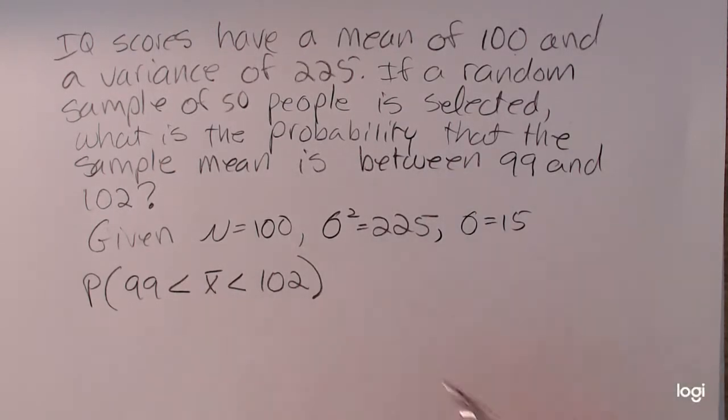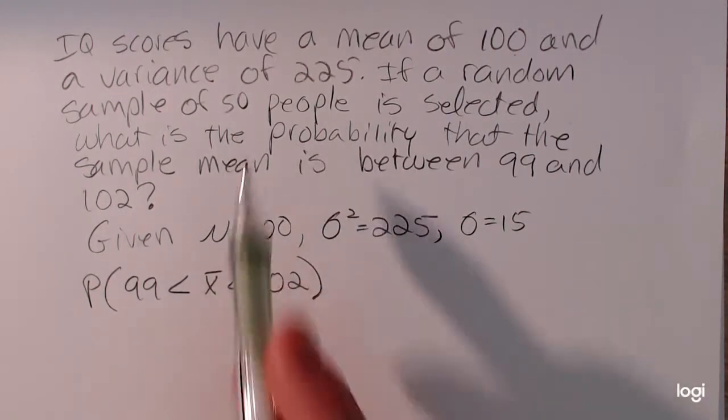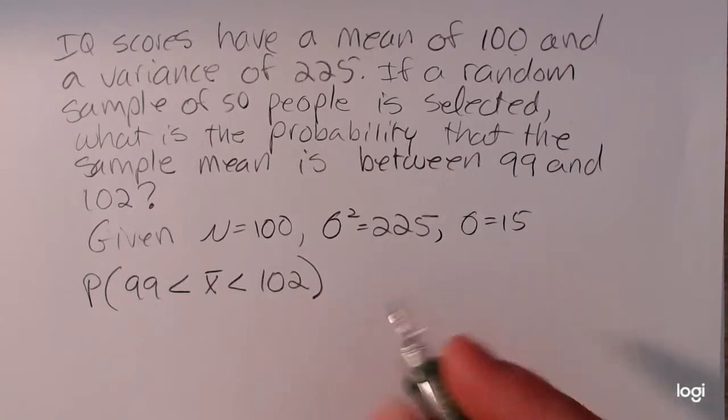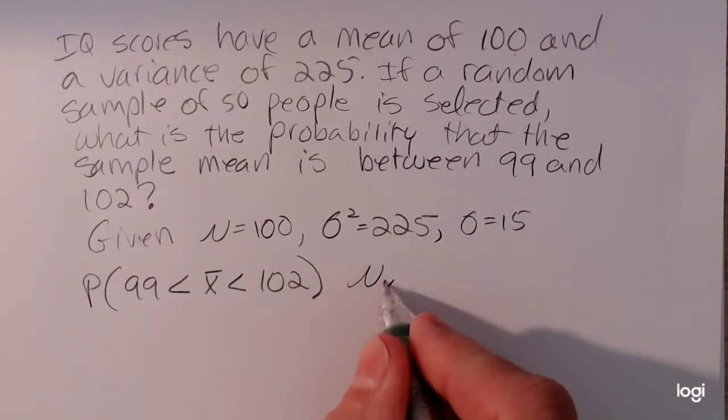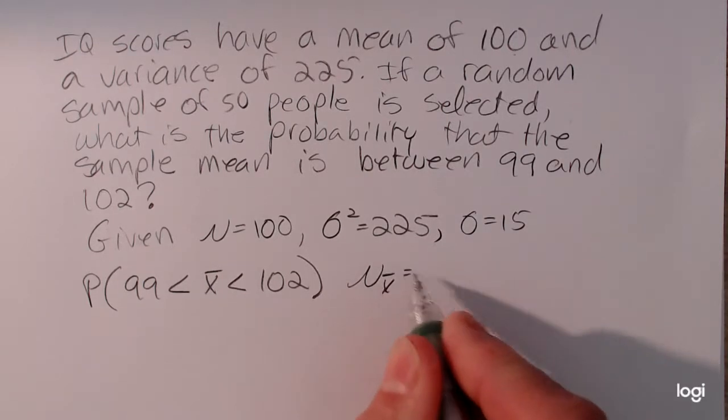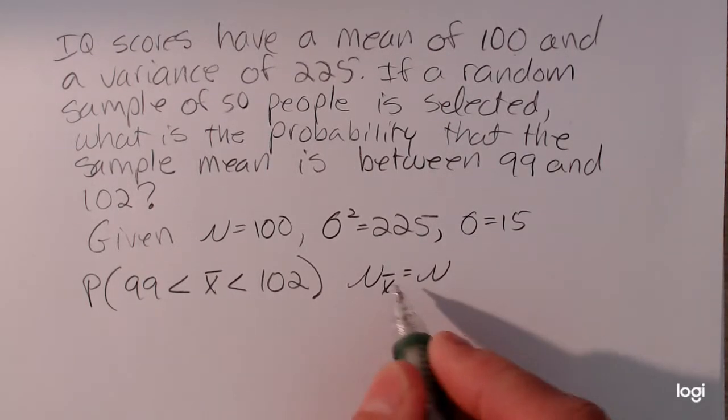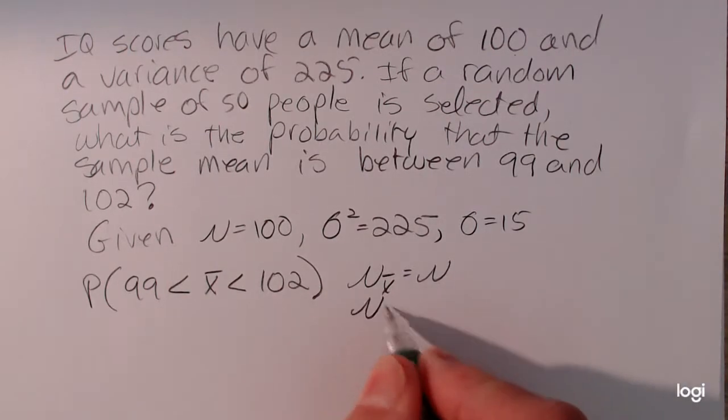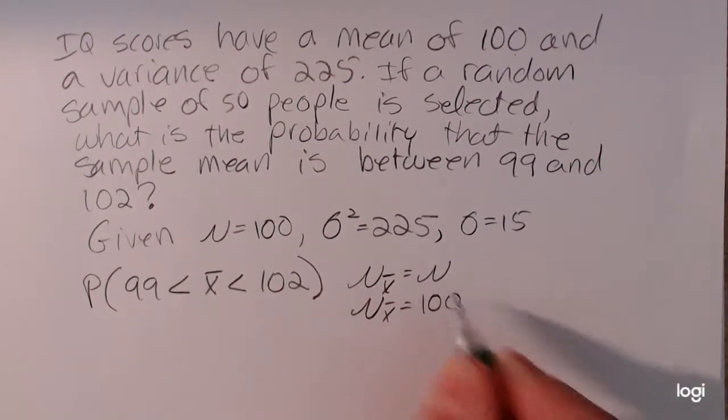So the central limit theorem says that X bar, if the sample size is at least 30, will be normally distributed with a mean the same as the original population. So mu sub X bar is equal to mu. So mu sub X bar for this example is 100.